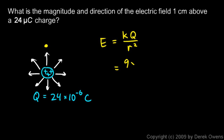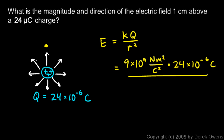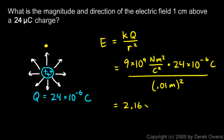We just put in the numbers. k is 9 times 10 to the 9th newton meters squared per coulomb squared, times the charge: 24 times 10 to the negative 6 coulombs. r is 1 centimeter — .01 meters — and that's squared. We do the calculation and it comes out to 2.16 times 10 to the 9th newtons per coulomb. So pretty strong — 2.16 billion newtons per coulomb. That's the electric field intensity at this distance r from charge q.